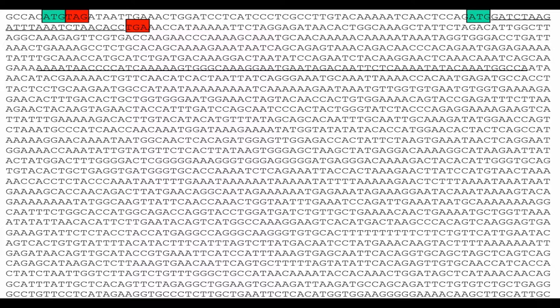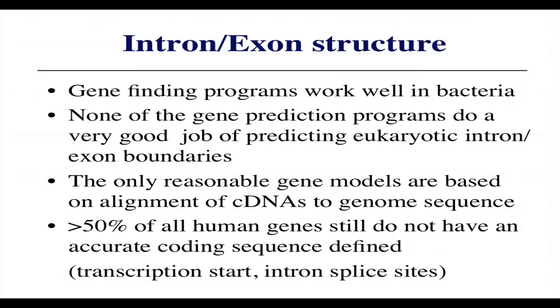You get a sequence with some ATGs and some stop codons, and the ORF finder will output the coding sequence and possibly an automatic translation. These gene finding programs work pretty well in bacteria because most of the bacterial genome is coding. Apply a little codon preference, take the longest open reading frame if they're nested, and you'll have a decent gene predictor. None of these methods work very well directly on predicting eukaryotic open reading frames because intron-exon boundaries are relatively hard to model.